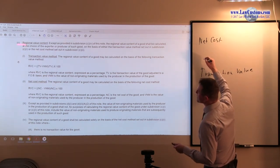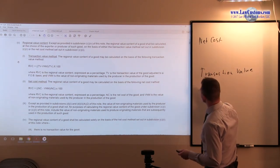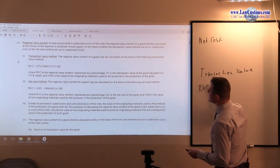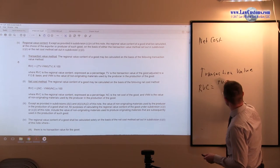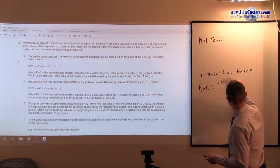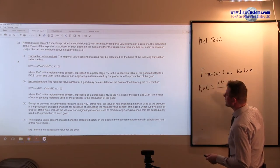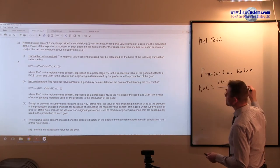The transaction value method would be RVC, regional value content, equals transaction value minus value of non-originating materials, divided by transaction value, and then multiplied by 100.